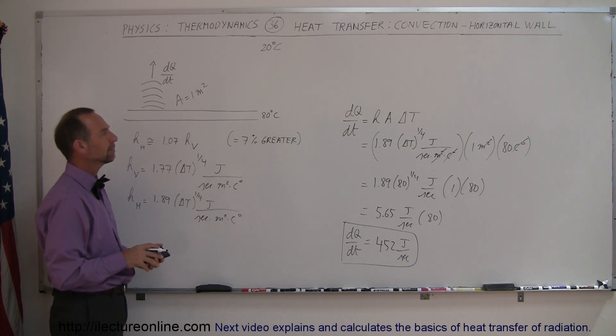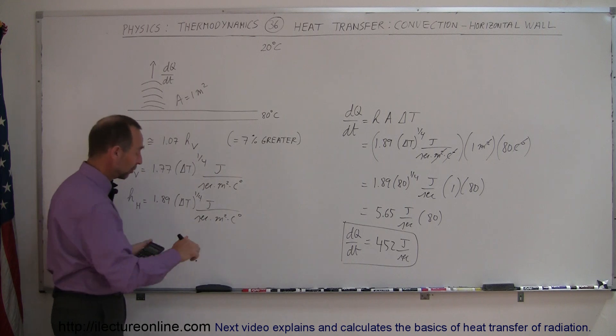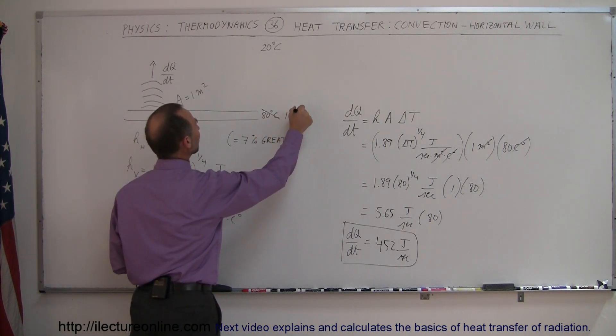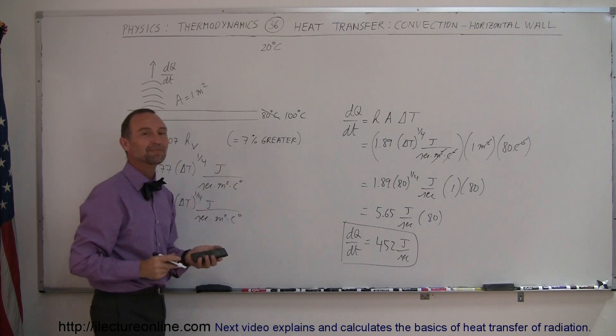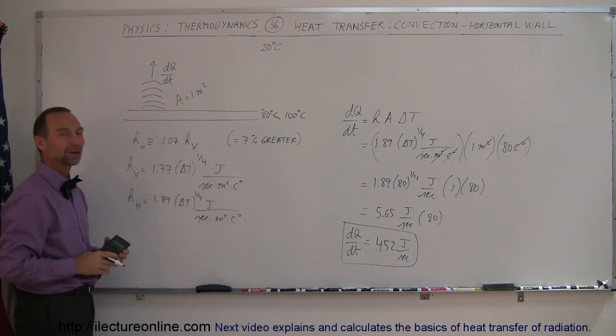You know what? I made a mistake, didn't I? Because I said that delta T was 80. So we can remedy that real quick. Why don't we call this 100 degrees centigrade so that the difference is 80? And now we've got a correct problem.